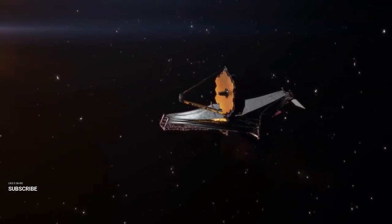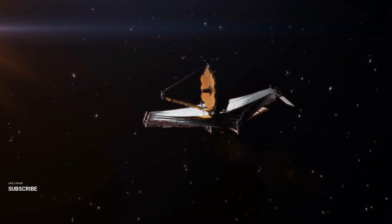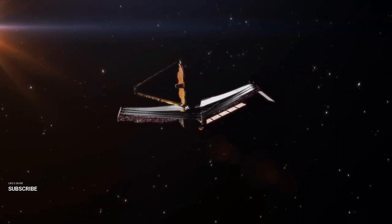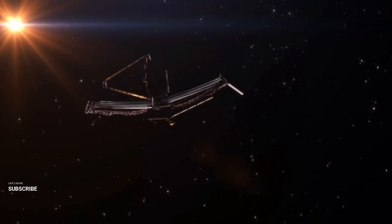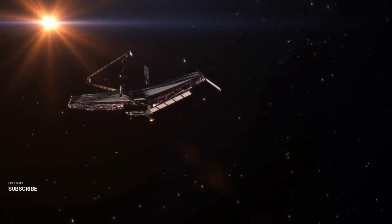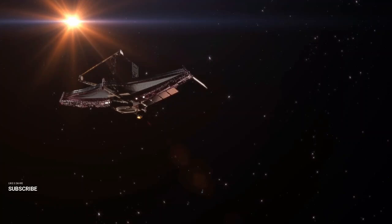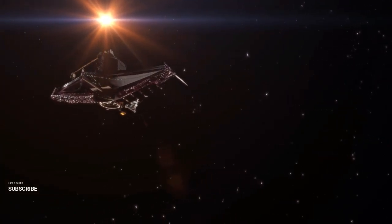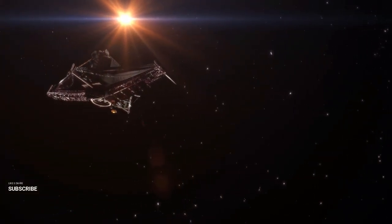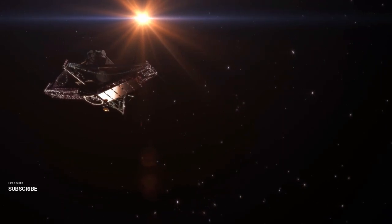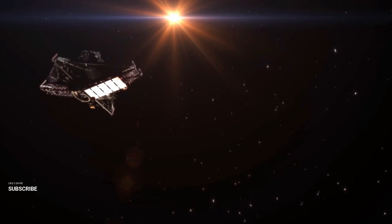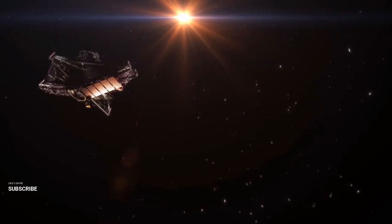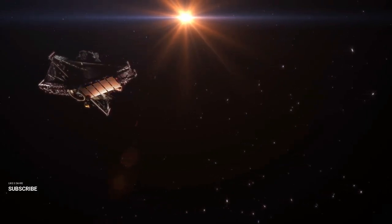But the James Webb Space Telescope didn't stop there. It also captured a stunning image of the Tarantula Nebula, revealing thousands of young stars in this cosmic nursery that had never been seen before. The telescope's advanced capabilities allowed it to detect gas, dust, and even distant background galaxies within the nebula. The detailed image shows the Tarantula Nebula, also known as 30 Doradus, resembling a tarantula's web-lined layer. Located 161,000 light-years away in the Large Magellanic Cloud.